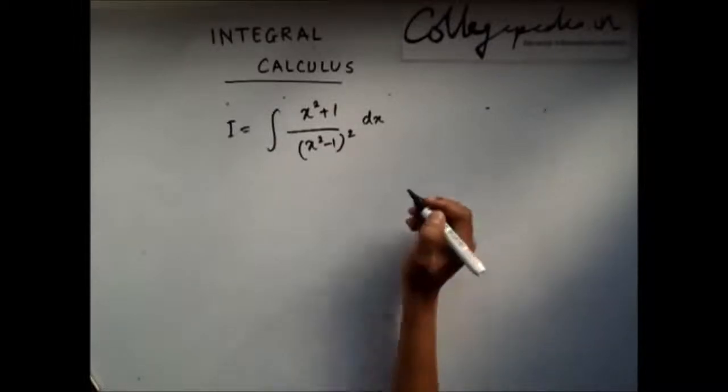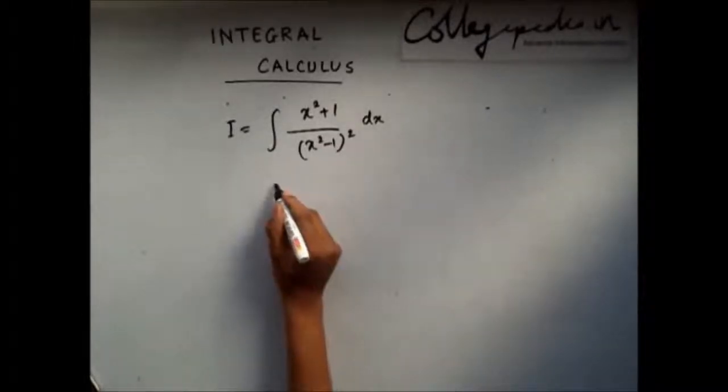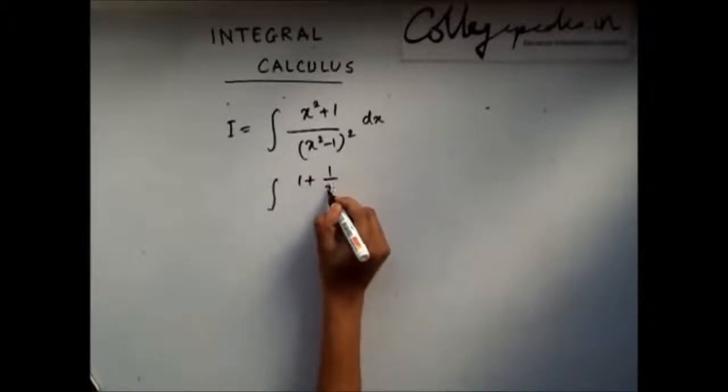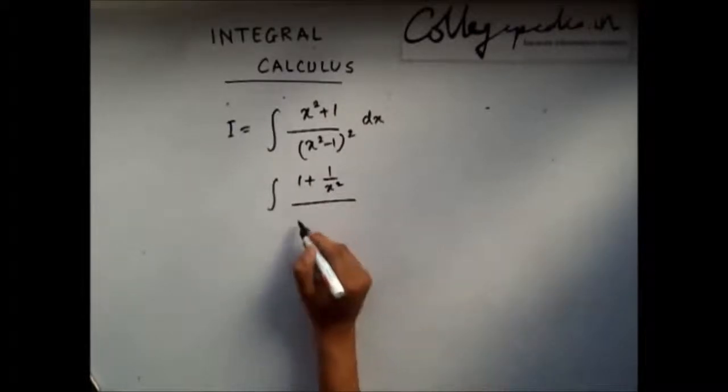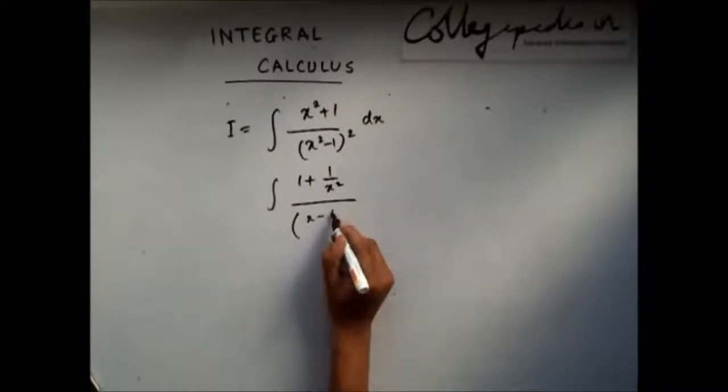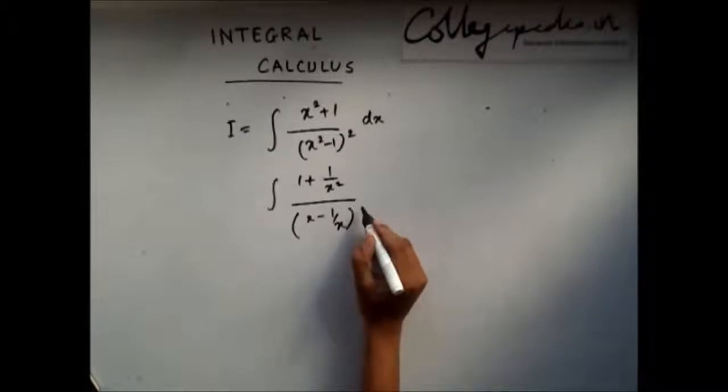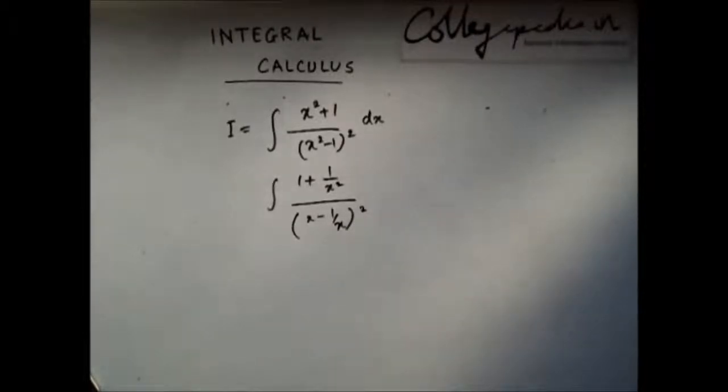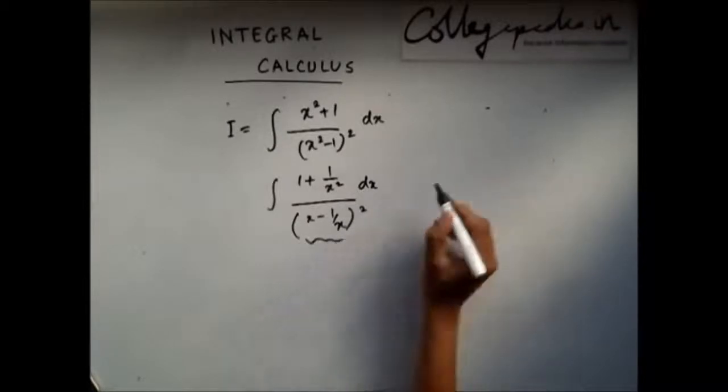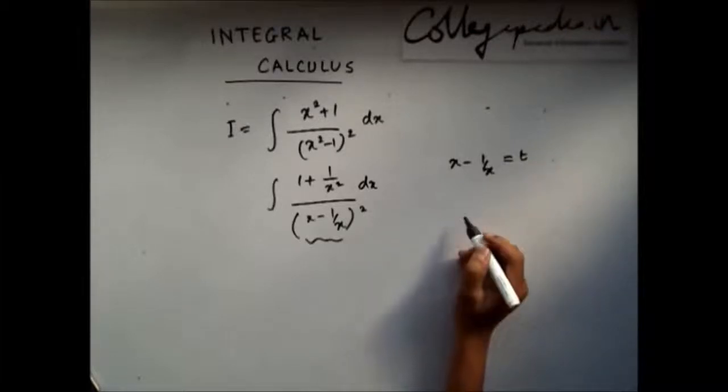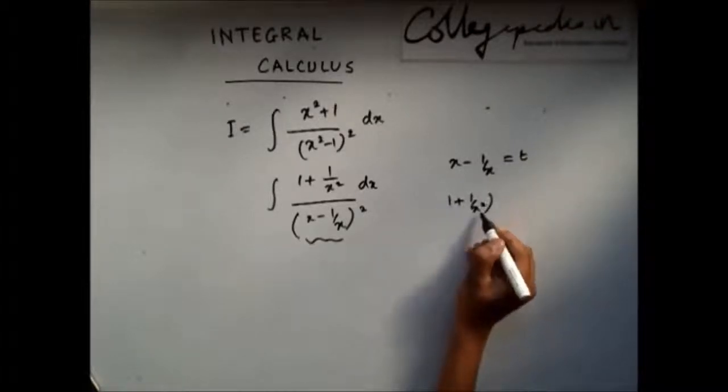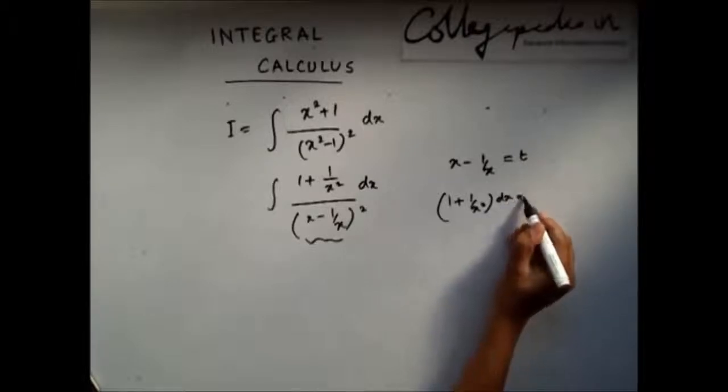To solve this, what we will do is I can write this as I will divide numerator and denominator by x square. Here I will get, now what I will do is x minus 1 by x, I will take as t. If I differentiate this, I will get 1 plus dx dx. This is dt.